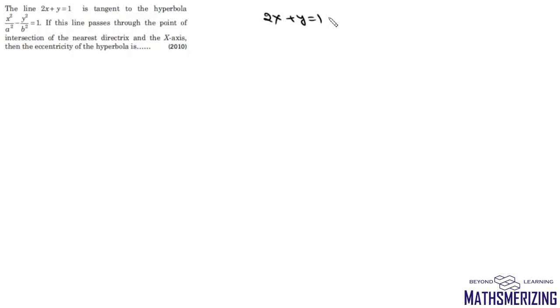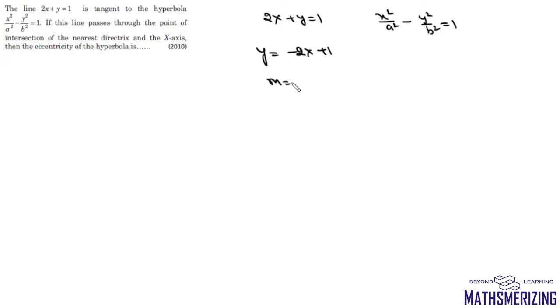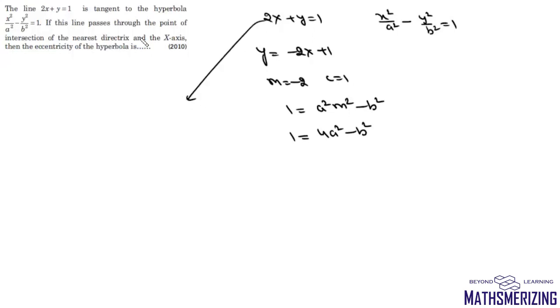The next question: the line 2x + y = 1 is tangent to the hyperbola x²/a² - y²/b² = 1. Rewriting: y = -2x + 1, so m = -2 and c = 1. The condition of tangency is c² = a²m² - b², giving 1 = 4a² - b².